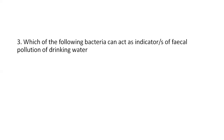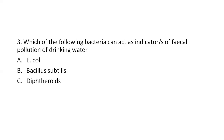Next question: Which of the following bacteria can act as an indicator of fecal pollution of drinking water? Option A, E. coli. Option B, Bacillus subtilis. Option C, diphtheroids. Option D, all of the above. The right answer is Option A, E. coli.